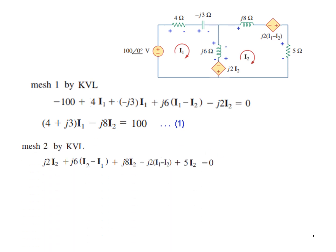Mesh 2 we start from here. So J2 I2. So J6 now we are in mesh 2, therefore it will be I2 minus I1. Then J8 I2, minus J2 I1 minus I2, and plus 5 I2. And collecting the like terms, you can follow this step. So this is our second equation.